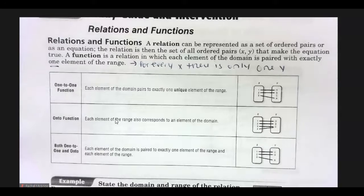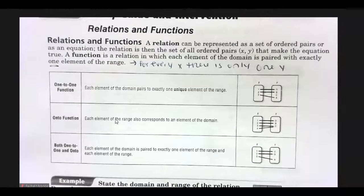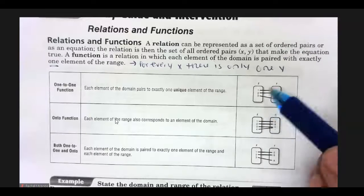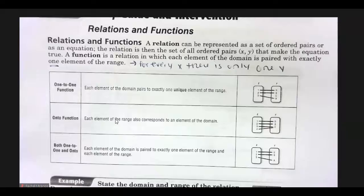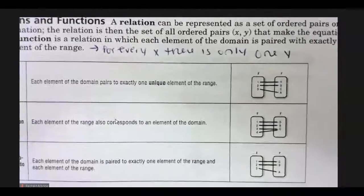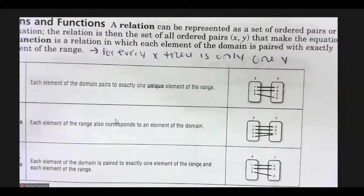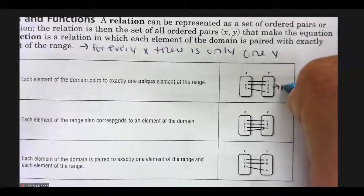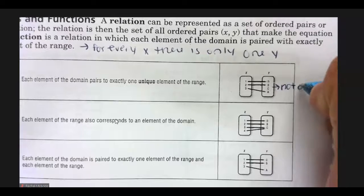A function is one to one if each element of the domain goes to exactly one element of the range. And then the difference in one to one and onto has to do with the range. So hopefully what you can notice here is this graph is not onto because there is an element in that range that does not have a pairing to the domain. So this c makes this not onto.